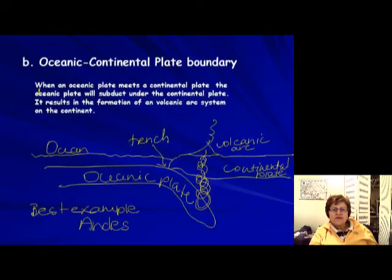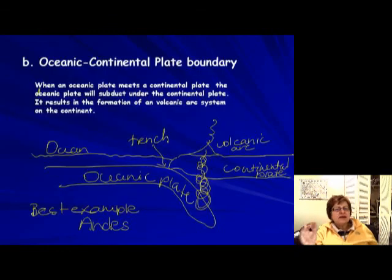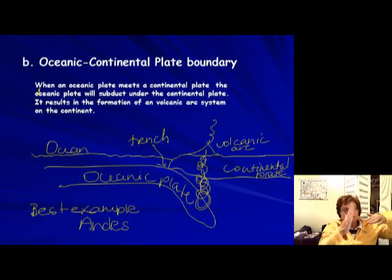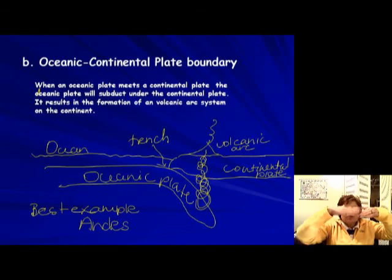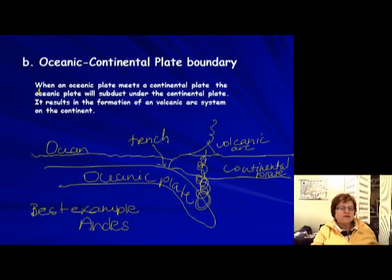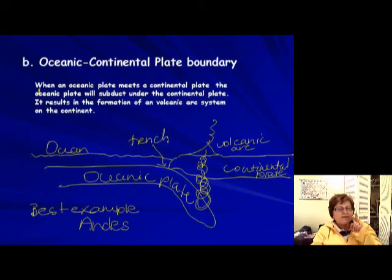The second type is the oceanic-continental boundary, where an oceanic plate meets a continent. The continental plate has a different density — but we'll have to stop here and continue in the next part, as the video has reached its length limit.